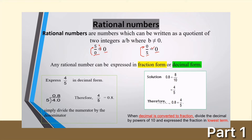Any rational number can be expressed in fraction or decimal form. For example, express four over five in decimal form. How are we going to convert four over five to decimal form? You simply divide the numerator by the denominator. Therefore, four over five is equal to zero point eight, or 0.8.